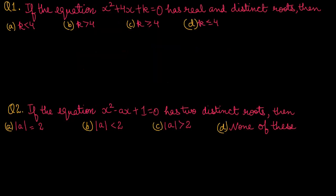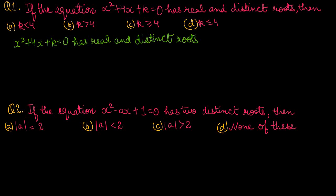Question No. 1: if the equation x² + 4x + k = 0 has real and distinct roots. We are given x² + 4x + k = 0, a quadratic equation, and its roots are real and distinct. If roots are real and distinct, that means its discriminant is greater than 0. Discriminant is b² - 4ac.